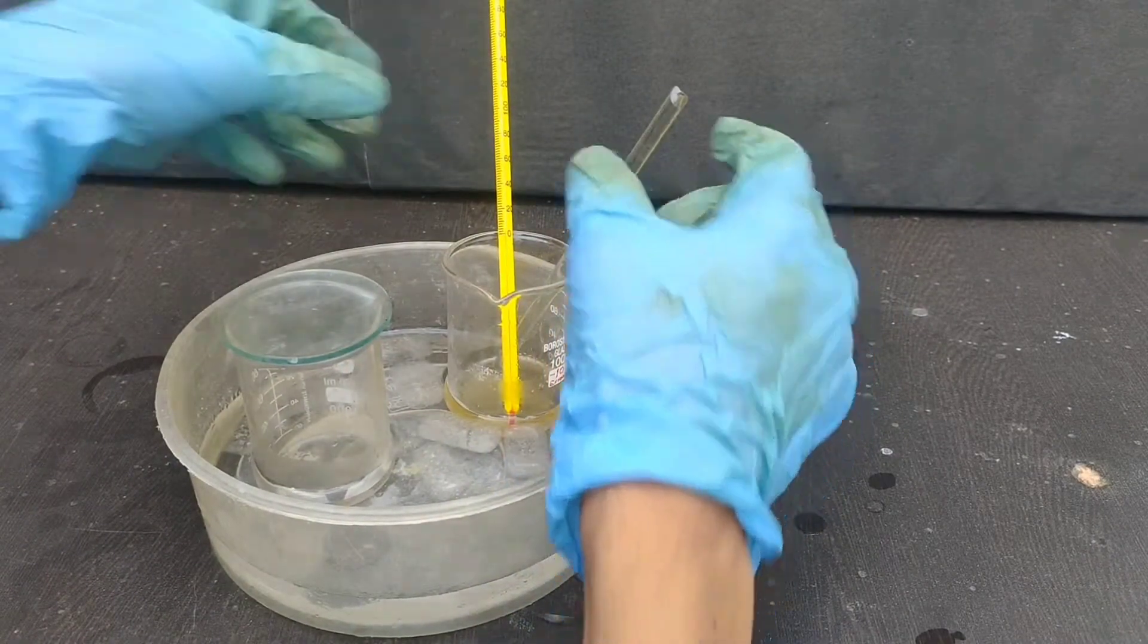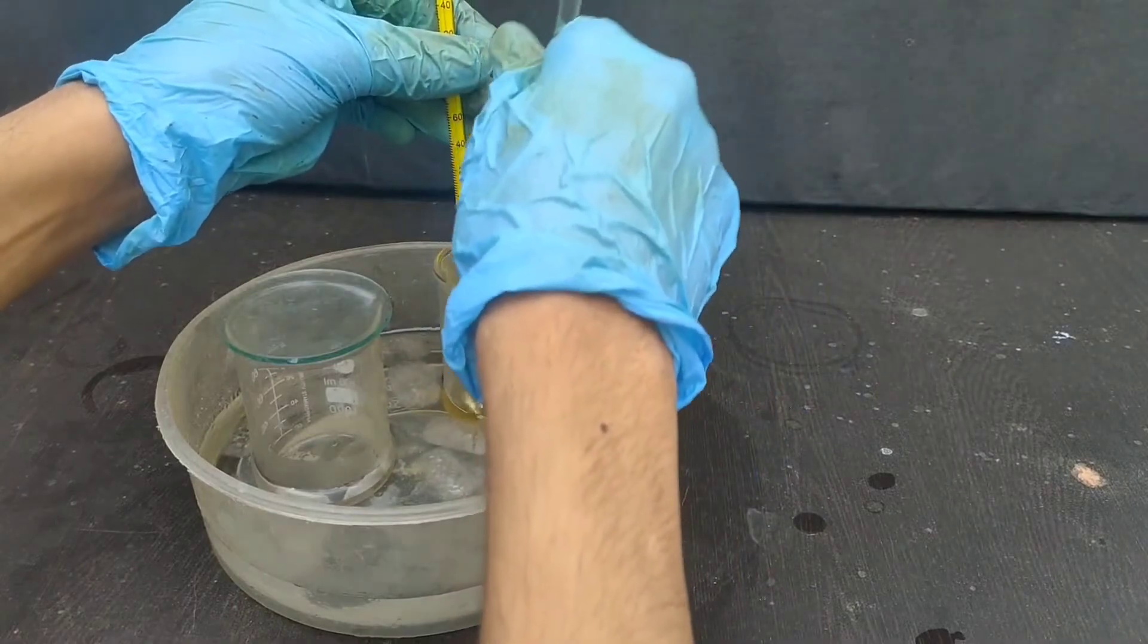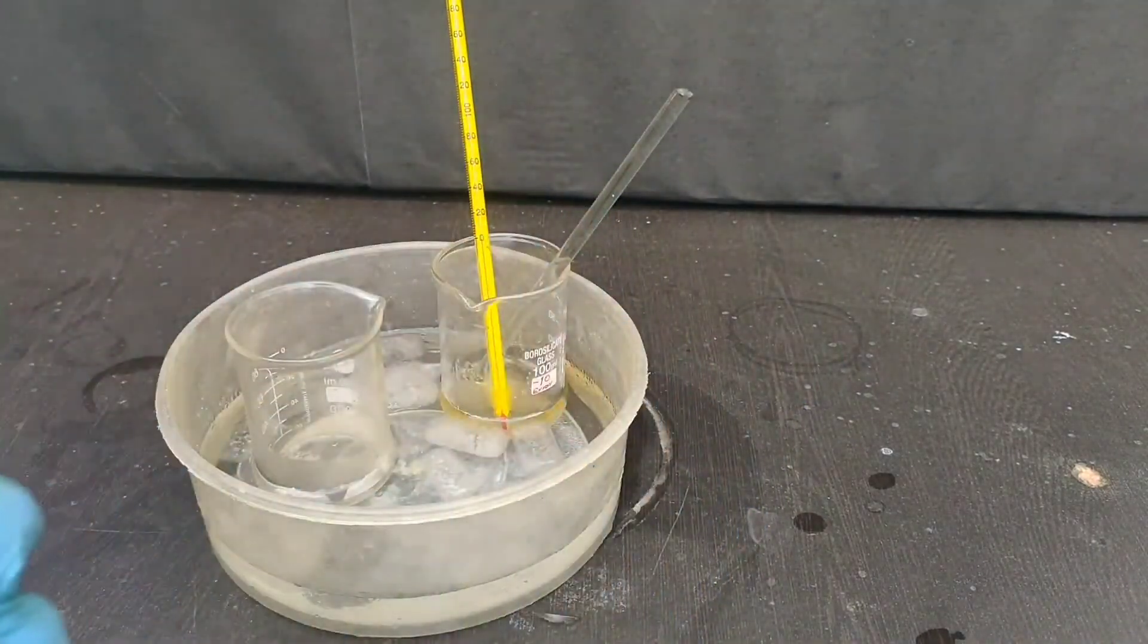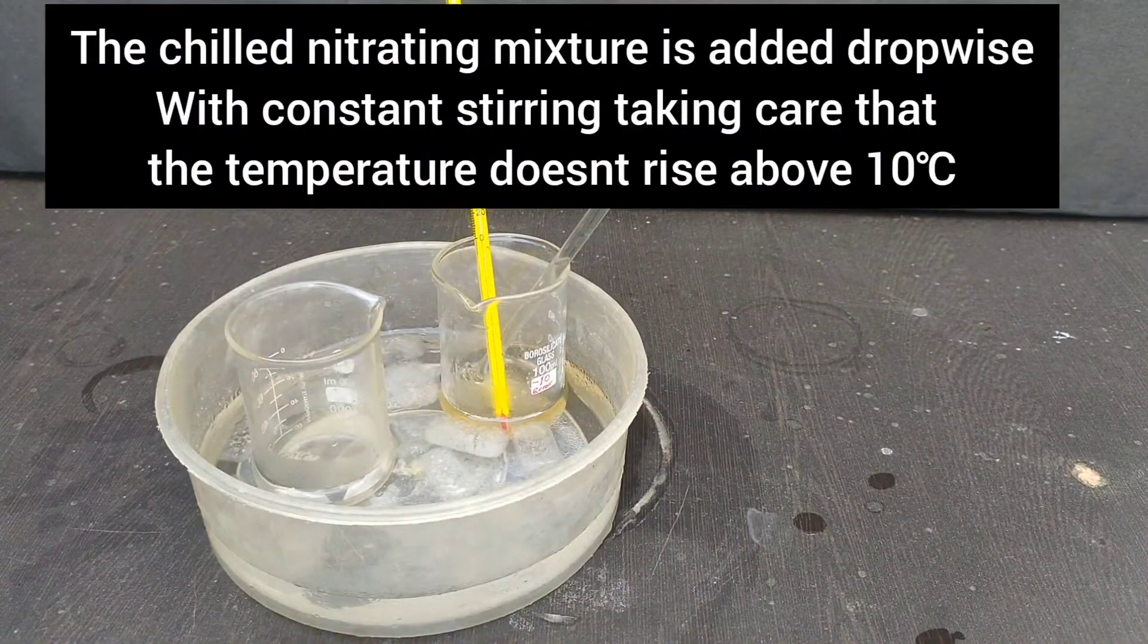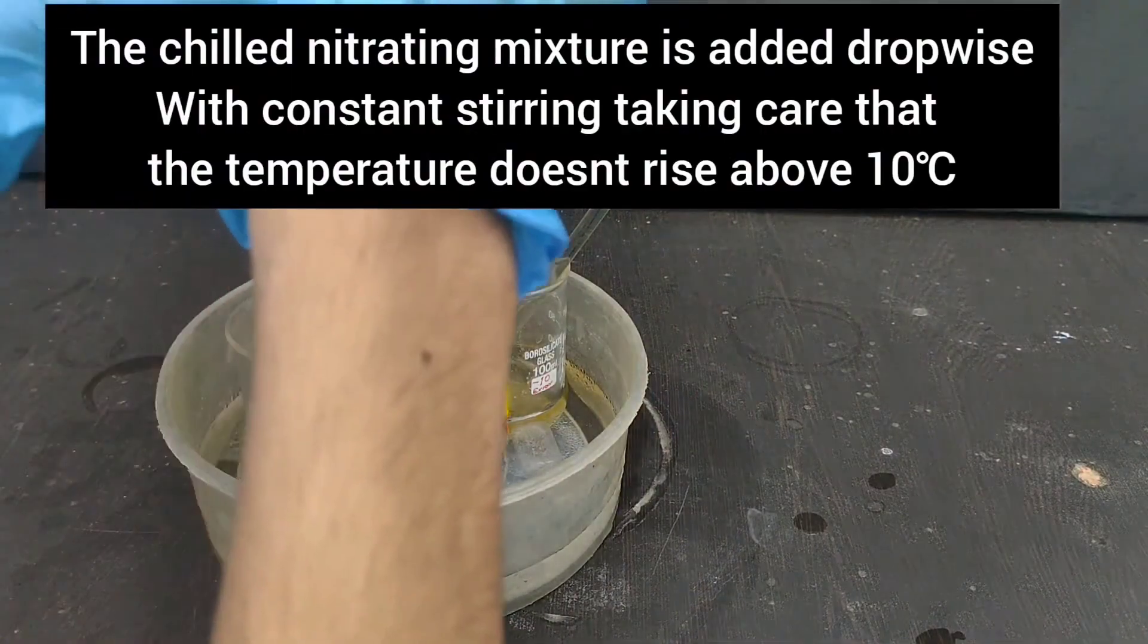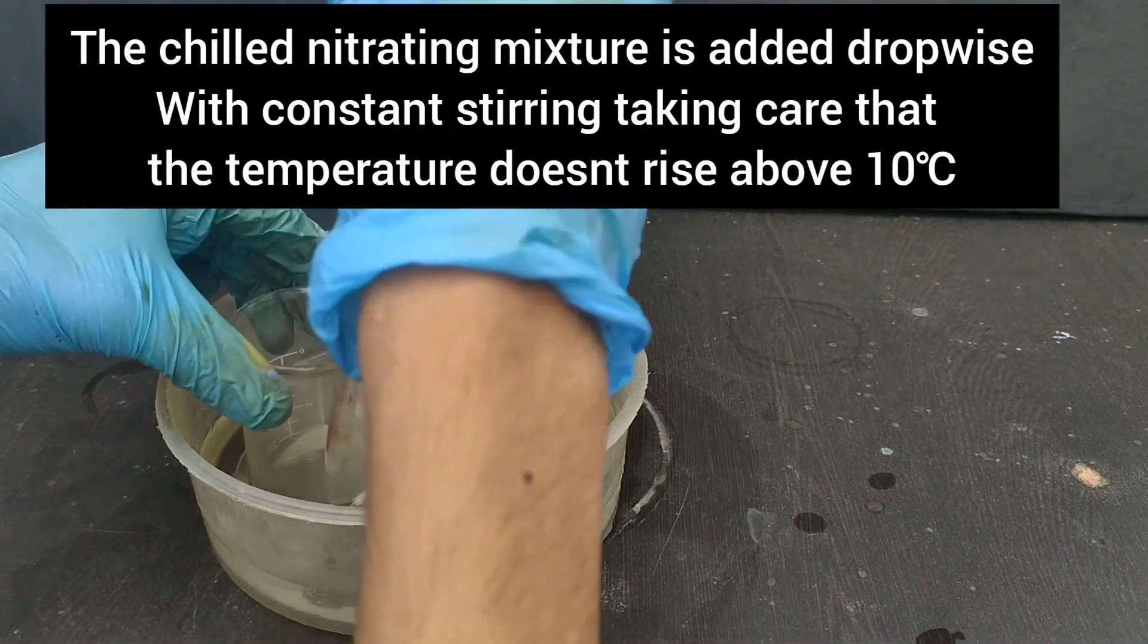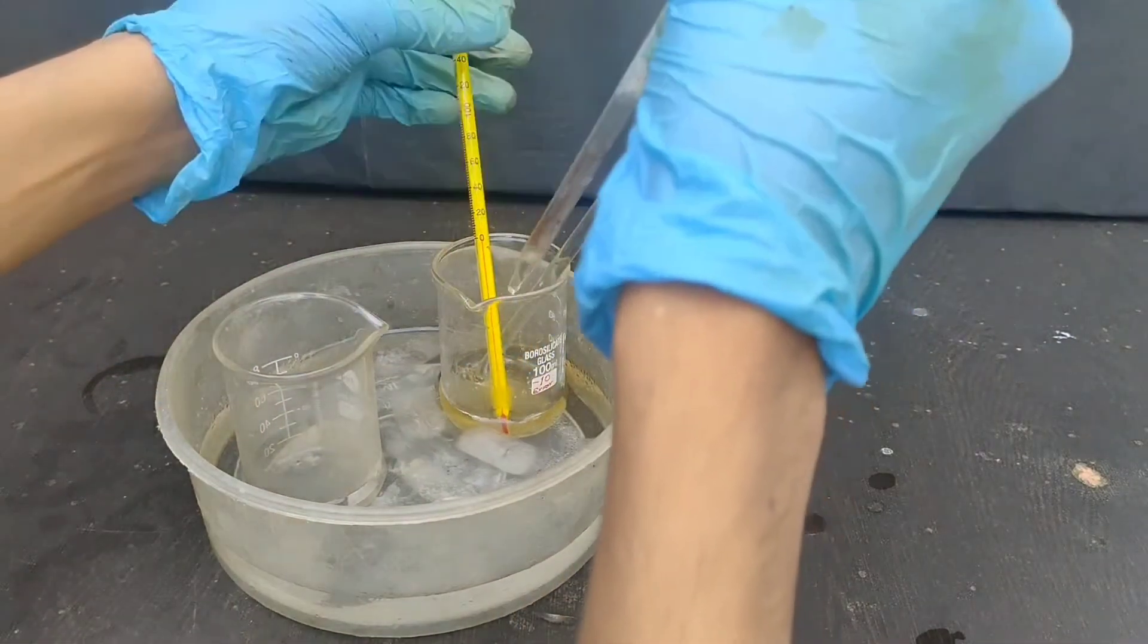After chilling the mixture up to 0 degrees Celsius, the nitrating mixture was added drop-wise with constant stirring, taking care that on each addition, the temperature does not rise higher than 10 degrees Celsius.